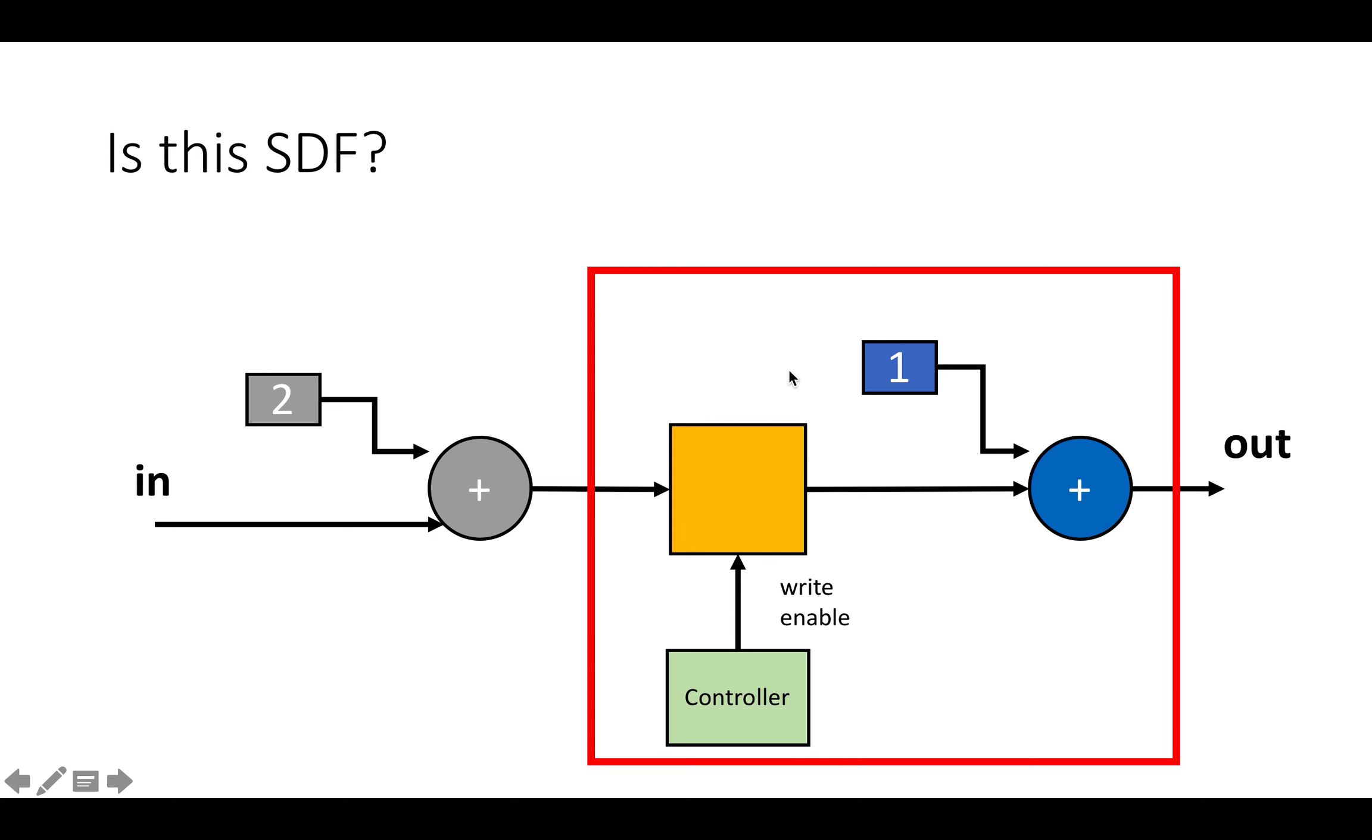So we can say that this area of the graph is approximately synchronous data flow if we define one firing to take place over multiple clock cycles, right? So one piece of data comes in, and then two pieces of data come out.